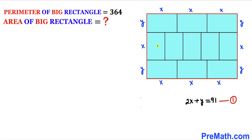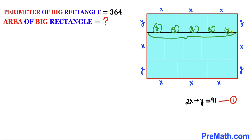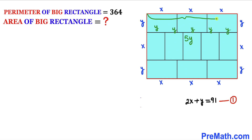Now let's focus on the middle tiny rectangles. Their width is y, so the whole vertical length along that side is y + y + y + y + y = 5y. And looking at the corresponding horizontal length, we have x + x + x = 3x. Since these two side lengths are equal, 3x equals 5y.